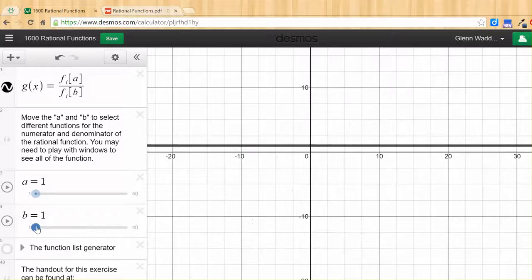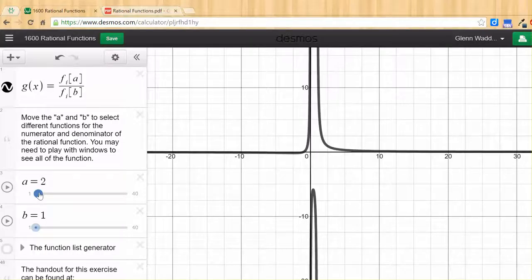So I'm going to pull my sliders all the way back to a equals one and b equals one. And I have a flat line. And the reason for this is a is selecting a function. That function is the numerator. And b is selecting another function. That function is the denominator. And so by taking the slider and moving it over one piece, one step, I have changed the function in the numerator.